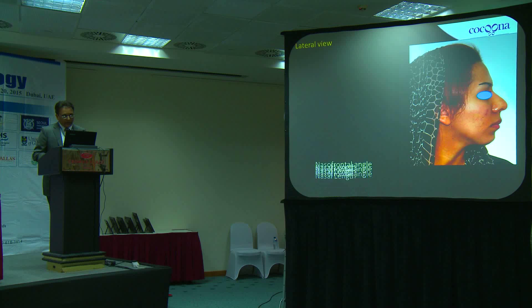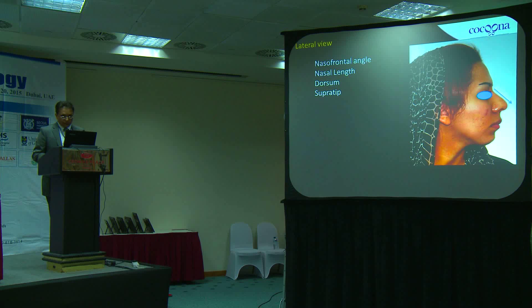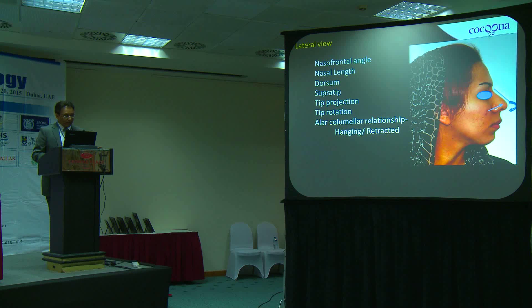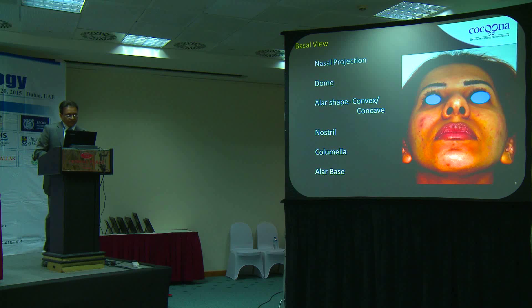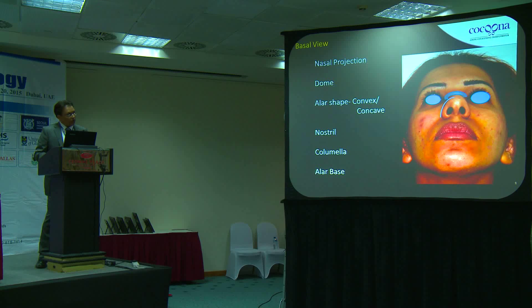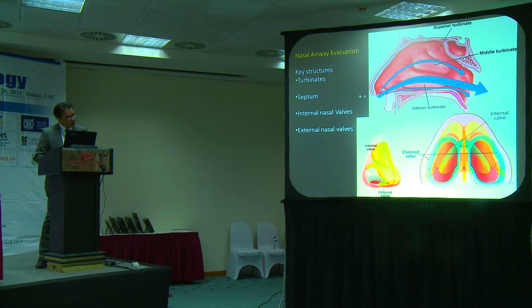In the lateral view we assess the nasal-frontal angle and nasal length, then the dorsum and supra-tip area, tip projection and tip rotation, the LR area to see the LR-columellar relationship, and finally the maxillary and mandibular deficiency and lip-chin relationship. In the basal view we assess the dome shape, the LR shape whether it's convex or concave, the nostril, the columella, and the LR base. We also perform nasal airway evaluation looking at turbinate, septum, and most importantly the internal and external nasal valves.